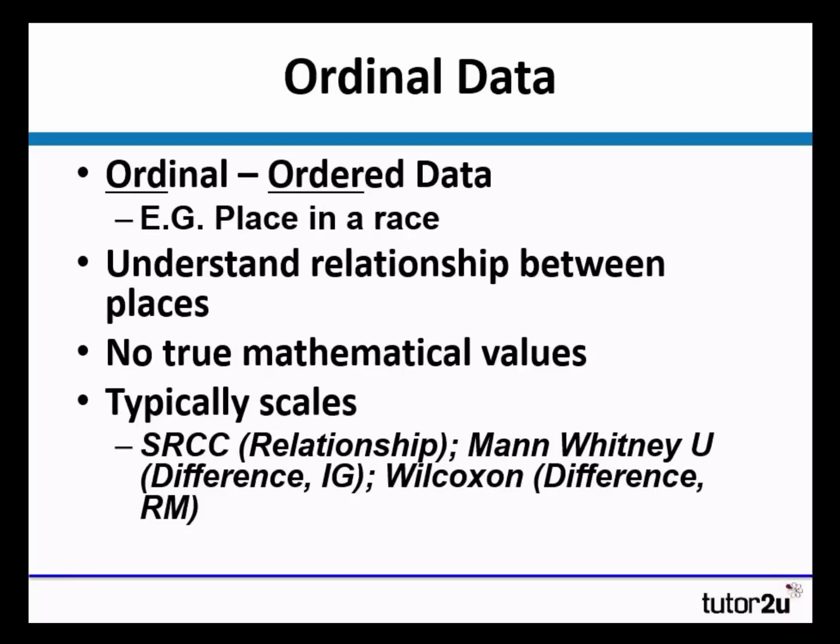Ordinal data is the next level up. Ordinal data is ordered data. For example, a place that you finish in a race. So first, second or third. We understand the relationship between the places. So first is better than second, and second is better than third. However, there's no true mathematical values. So we don't know how fast you went in the race, or how long the race was. It's simply telling us the different positions.